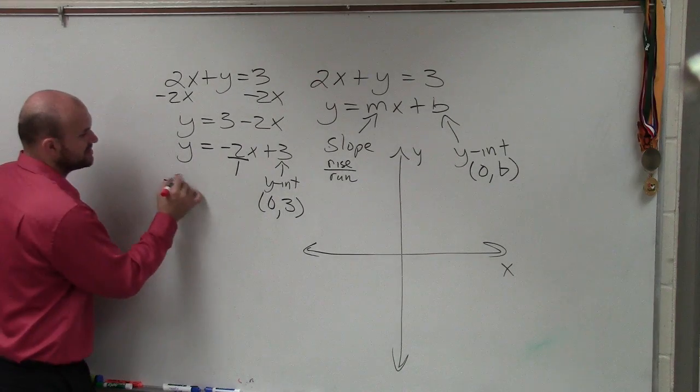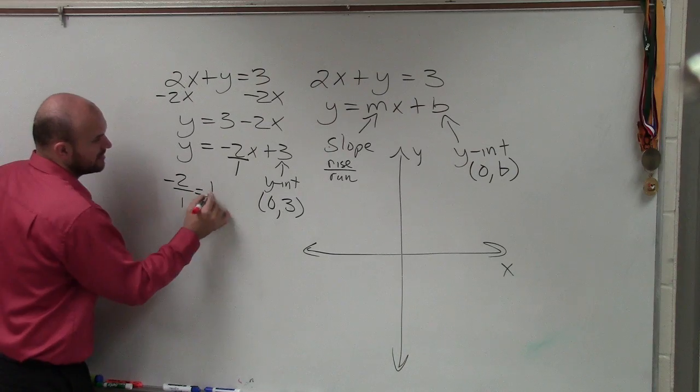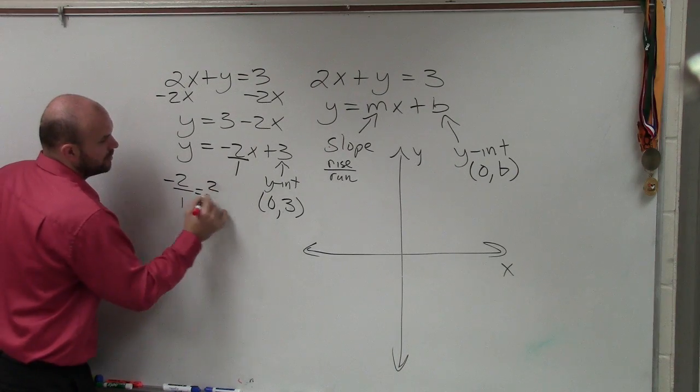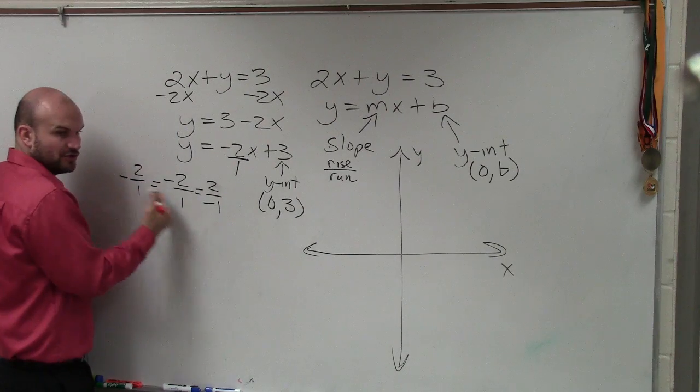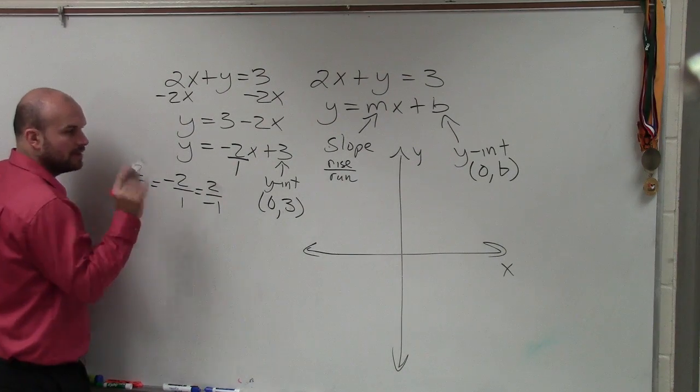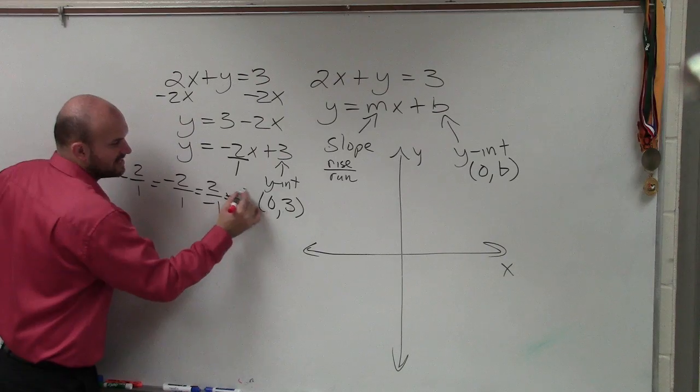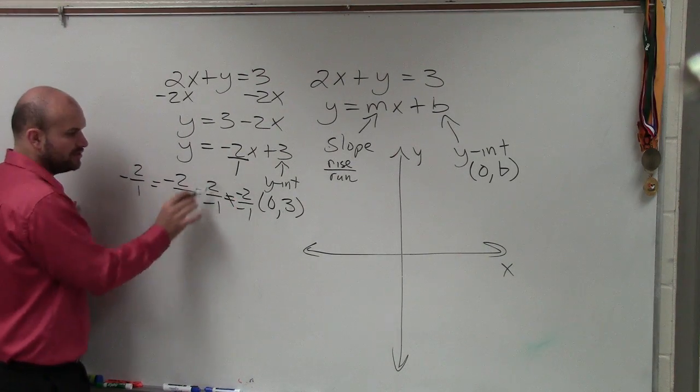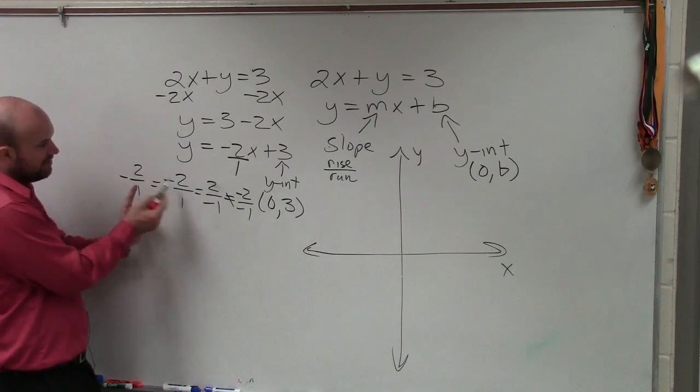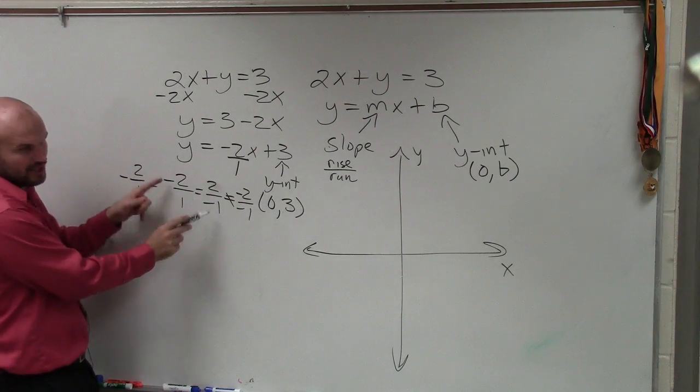The ratio of slope, make sure you understand that negative 2 over 1 is equal to 2 over negative 1. Do you agree with me these are all the same? But please note that this is not the same. Negative 2 over negative is positive. So you can either make the negative up top or the negative up bottom. But you're going to want to distribute the negative to one of the others.